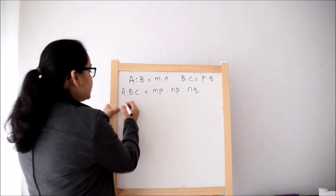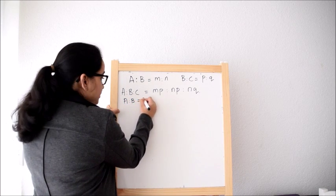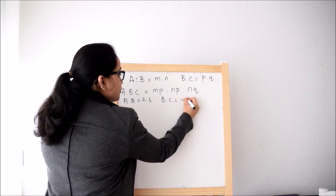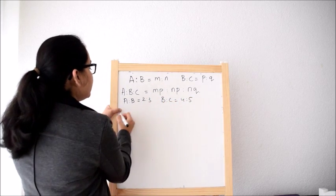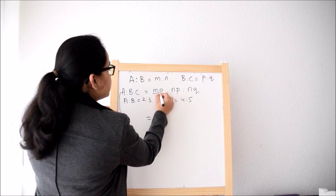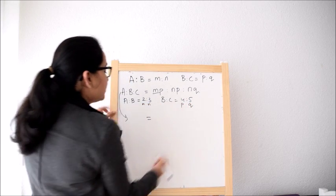Now in our question A is to B was 2 is to 3 and B is to C was 4 is to 5. So according to this, this is M, this is N, this is P, this is Q.